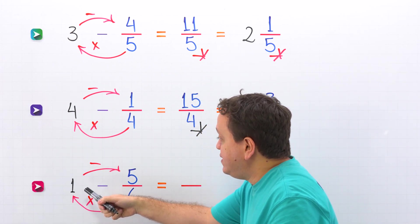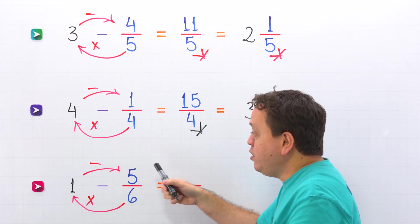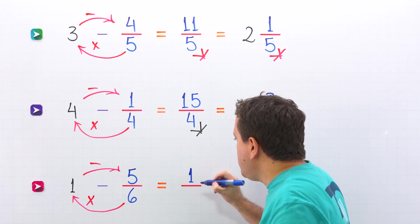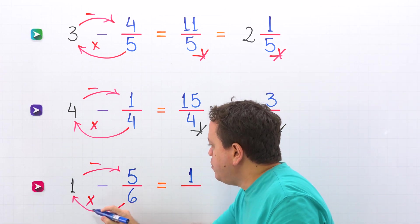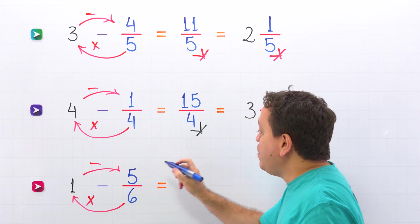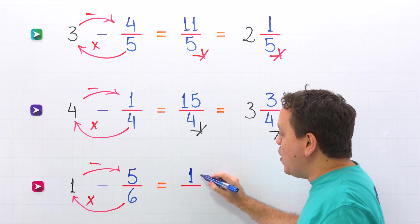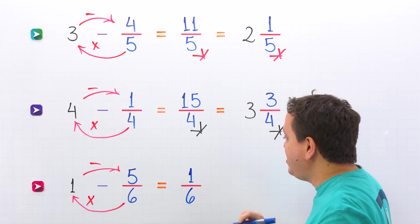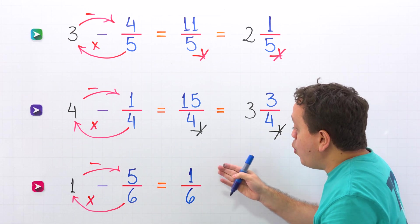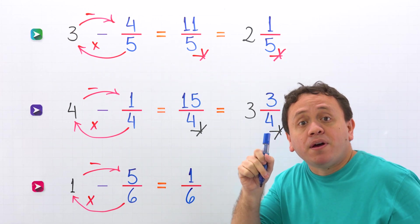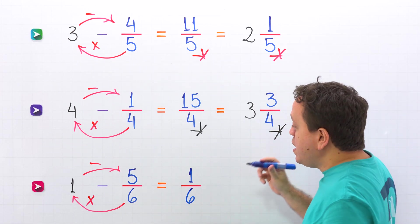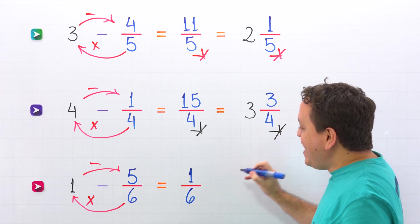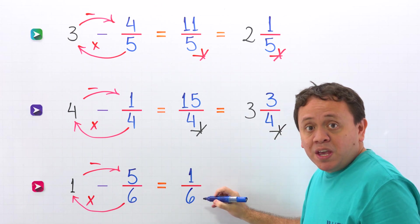6 times 1 is 6, minus 5 gives us 1. And then we keep the denominator of the fraction: 6. 1 sixth is a proper fraction, because the numerator — the top number — is less than the denominator, the bottom number.